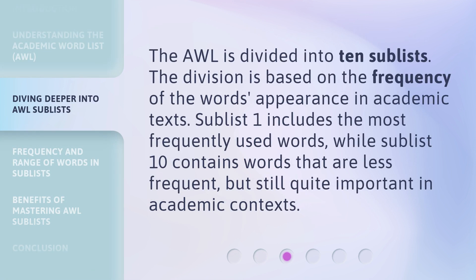The AWL is divided into 10 sublists. The division is based on the frequency of the word's appearance in academic texts. Sublist 1 includes the most frequently used words, while Sublist 10 contains words that are less frequent, but still quite important in academic contexts.